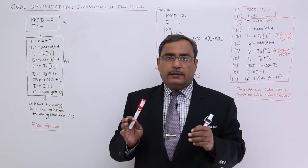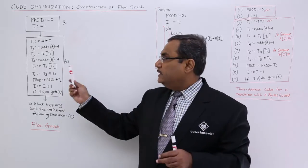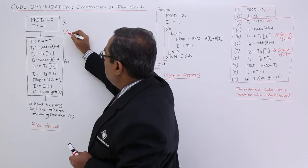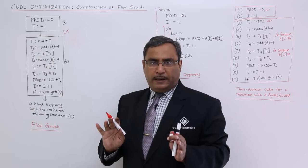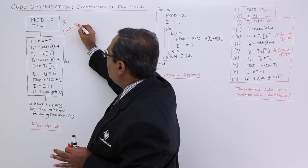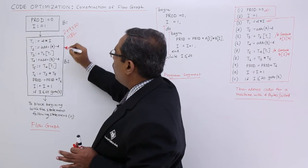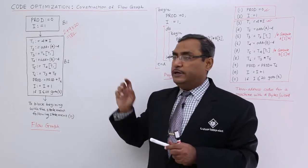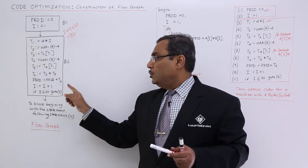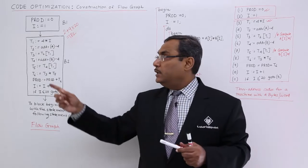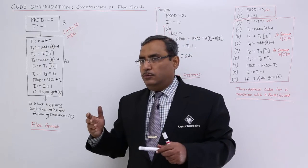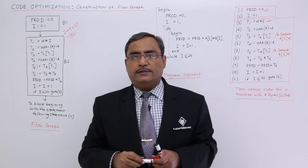Let us calculate how many statements are executed. We have 2 statements in B1 and 9 statements in B2. The loop executes 20 times, so 9 times 20 equals 180, plus the 2 initialization statements gives 182 statements total. This is a loop, so if we apply loop optimization, this code can be minimized. We will continue with loop optimization and data flow analysis in our next sessions.